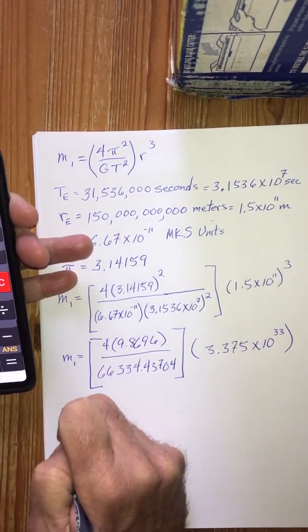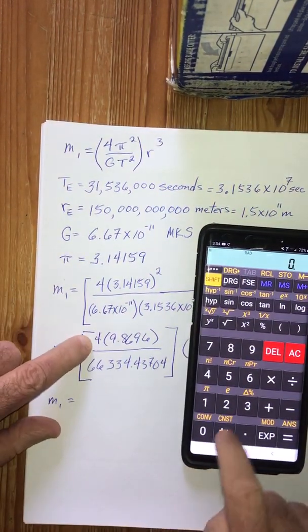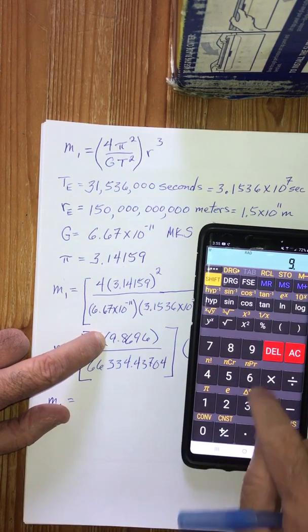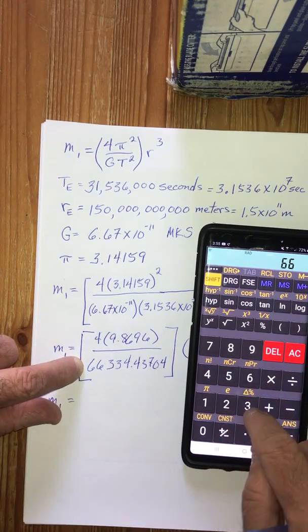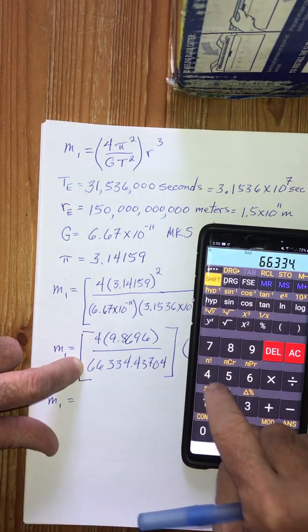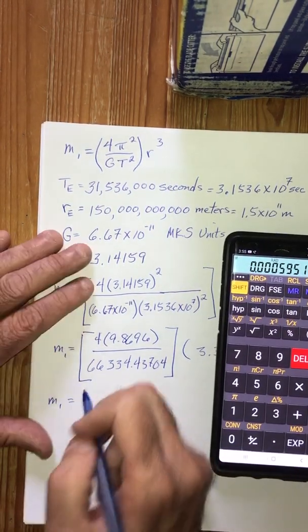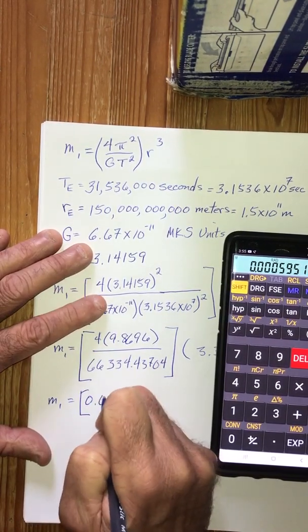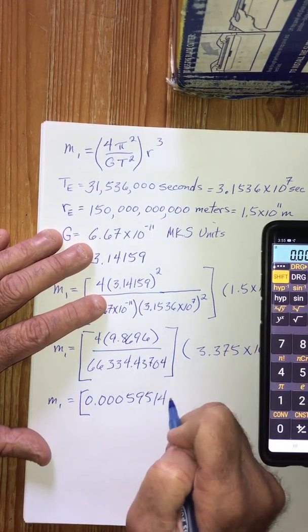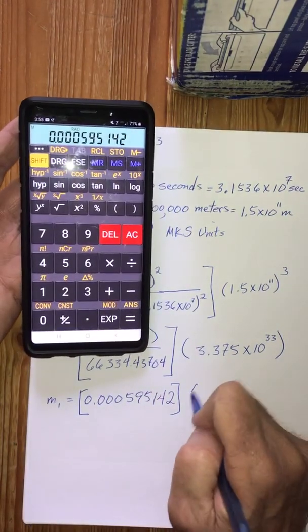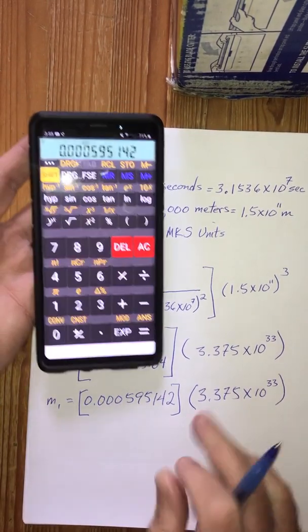Okay, so let's go to the next step. Now let's resolve this thing inside the square brackets here first. So we're going to say 4 times 9.8696, divide that by 66334.43704, and we get 0.000595142. And we recall that we're going to be multiplying that by 3.375 times 10 to the 33rd power.